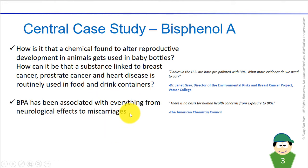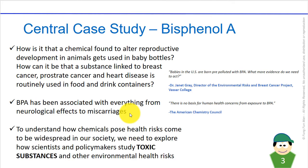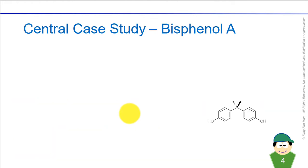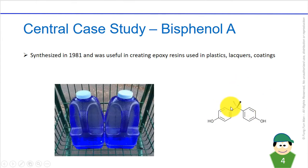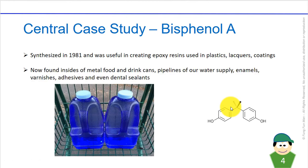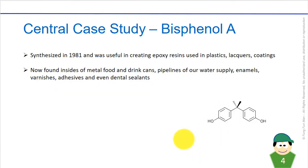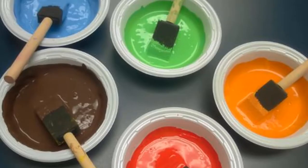The chemists first synthesized BPA, which is an organic compound with the chemical formula C15H16O2, in the year 1891. As they began to produce plastics in the 1950s, the chemists found that BPA was very useful in creating the epoxy resin used in lacquers and coatings — so it could possibly even be found in nail polish.